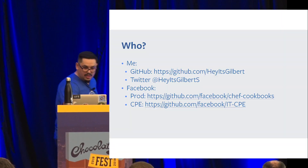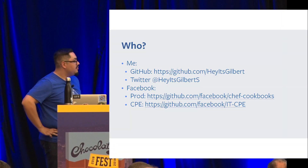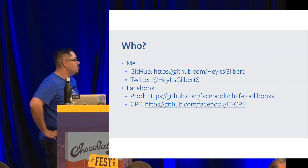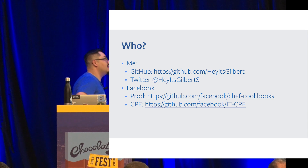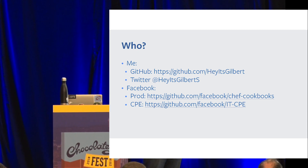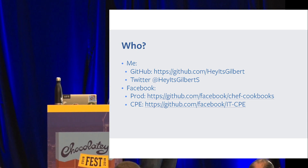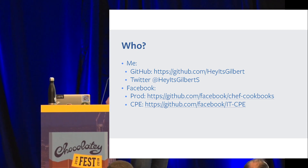Hey everybody, I'm Gilbert Sanchez, I am a senior systems engineer at Facebook. I've been there seven years. On my GitHub you'll find a lot of really bad political references, and on my Twitter you'll find a lot of bad code.